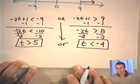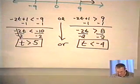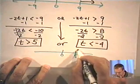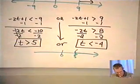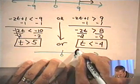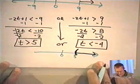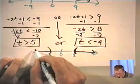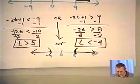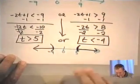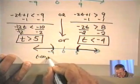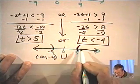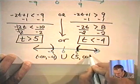Bringing down the OR, let's come up with the interval notation. I need all values of t strictly greater than 5, and all values of t less than negative 4. Using the number line to see it clearly: the interval from negative infinity to negative 4 with an open parenthesis, union with the interval from 5 to infinity.